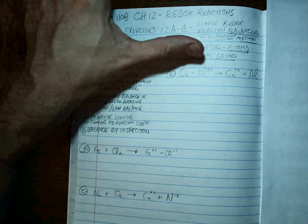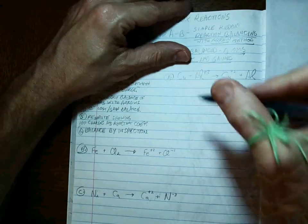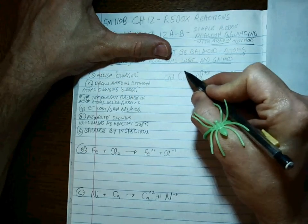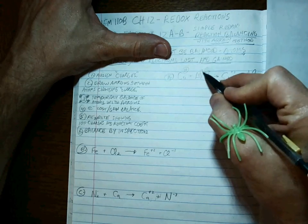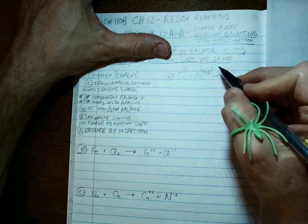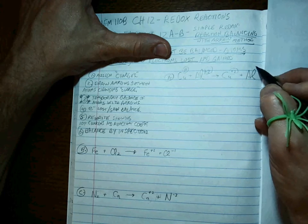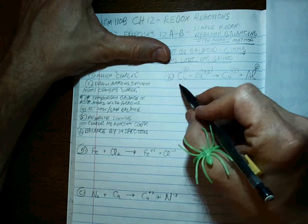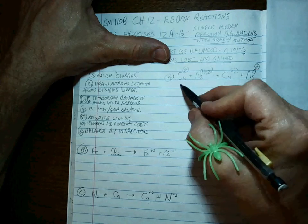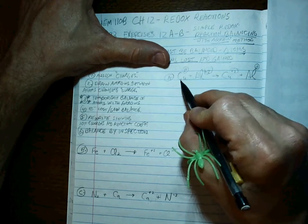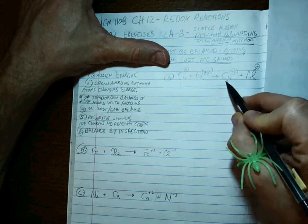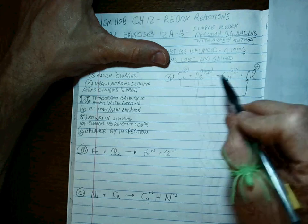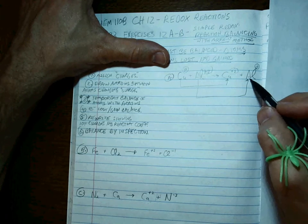Let's try it. For Problem A, assigning charges: copper by itself is an atom with charge zero, and an ion by itself carries the charge shown. Now let's draw our arrows. The copper goes to copper, and the aluminum goes to aluminum — it's clear that copper turns into Cu²⁺ and aluminum turns into Al⁰.